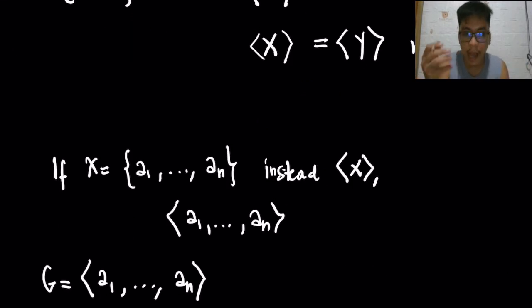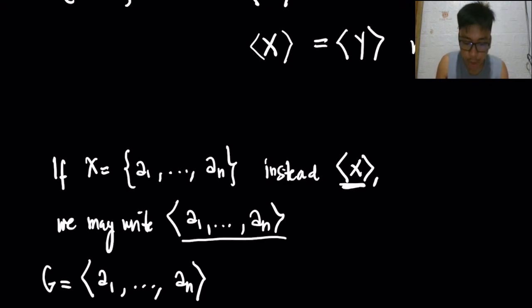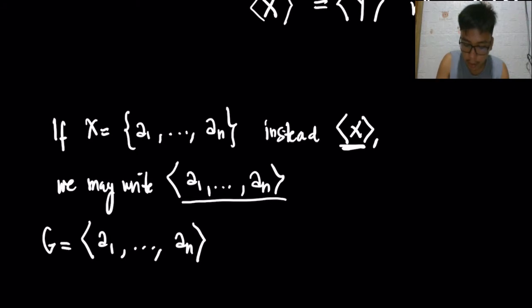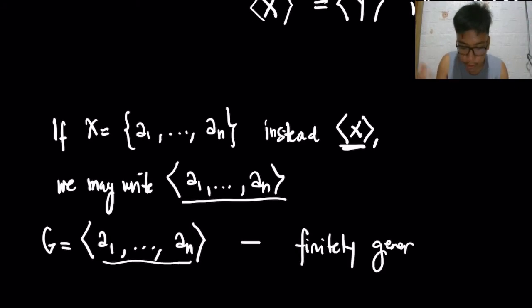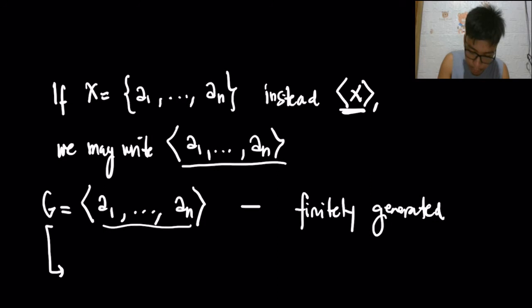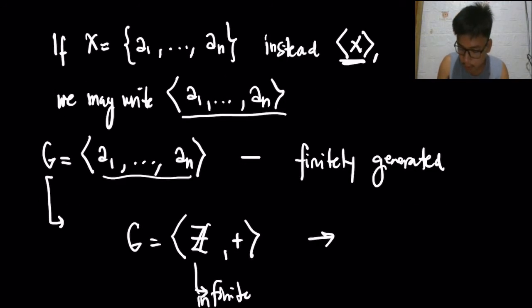If your X is the set containing A1 to AN, then instead of the general notation, we may write it more specifically. If G equals the group generated by these sets, then G is finitely generated. Although G is finitely generated, it doesn't necessarily mean that G is finite. For example, the set Z together with the plus operation is infinite, but it is actually generated by 1, so G is finitely generated.